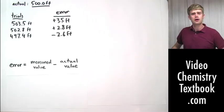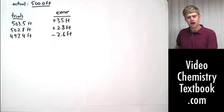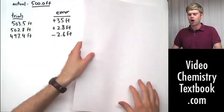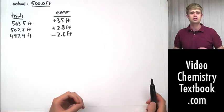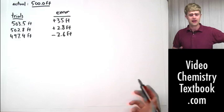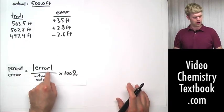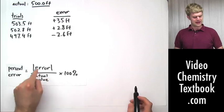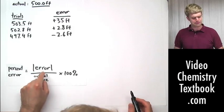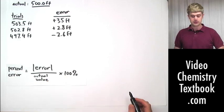So instead of just calculating error, we also often want to calculate something called percent error. And what percent error does is give us an idea of how big our error is compared to the size of what we were actually measuring. So basically, is it a big deal? Should we worry about it or not? So percent error can be described as the absolute value of the error divided by the actual value times 100%.